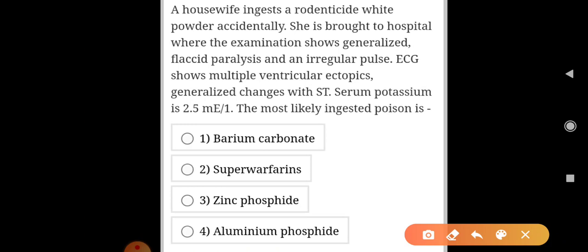A housewife ingests a rodenticide white powder accidentally. She is brought to hospital where examination shows generalized flaccid paralysis and irregular pulse. ECG shows multiple ventricular ectopies, generalized ST changes. Serum potassium is 2.5 milliequivalent per liter. What is the most likely ingested poison? This is barium carbonate. Multiple ventricular ectopies, ST changes, serum potassium low in barium carbonate.